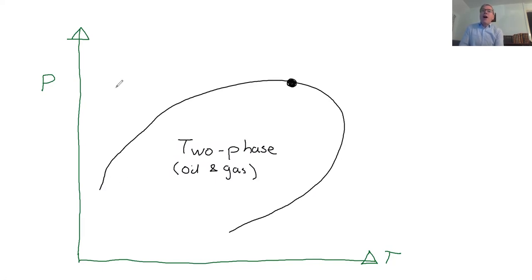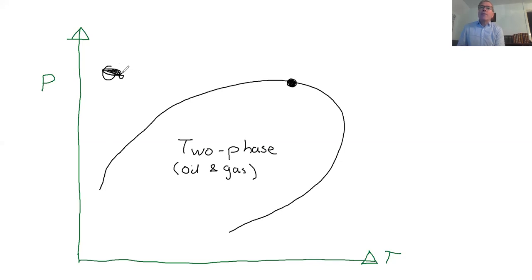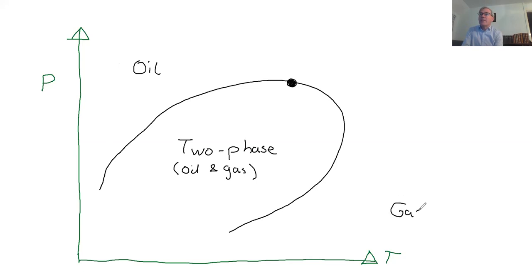At very high pressures and low temperatures, things tend to be liquid-like, so here we have a single phase that's oil. At very high temperatures and low pressures, things tend to be gas-like. So this is an example of what a phase diagram for an oil and gas mixture might look like.